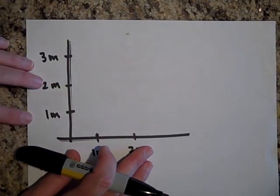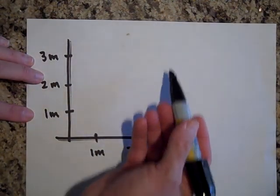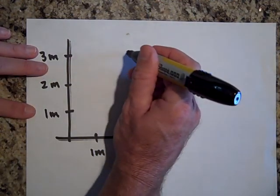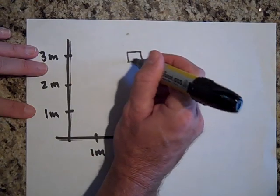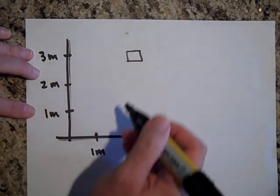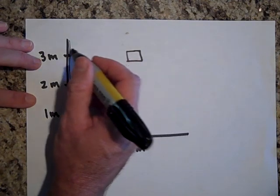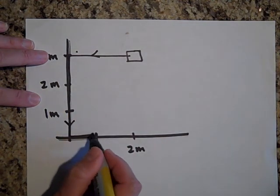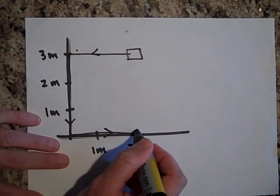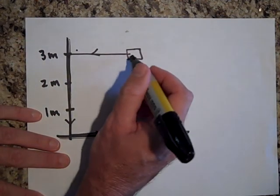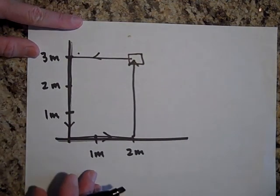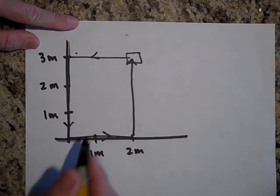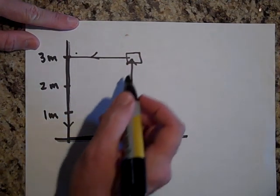Let's define upward and downward directions and take a two-kilogram box at the two-meter, three-meter position. I'm going to move it in a closed path — here, to here, to here, to here, and back to the start — and calculate the work done by the force of gravity. Since gravity is a conservative force, the total work should be zero.